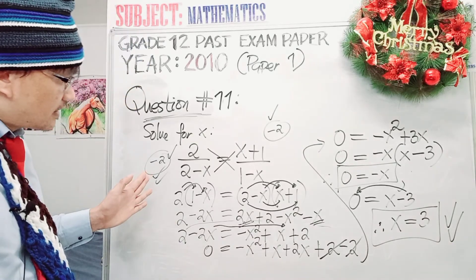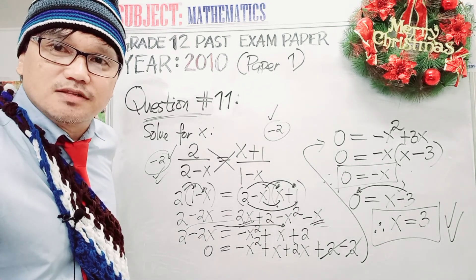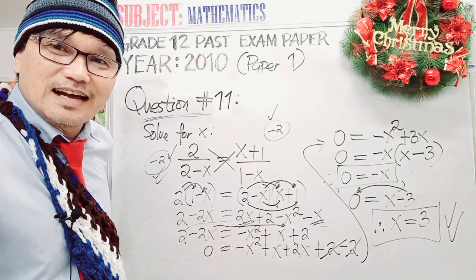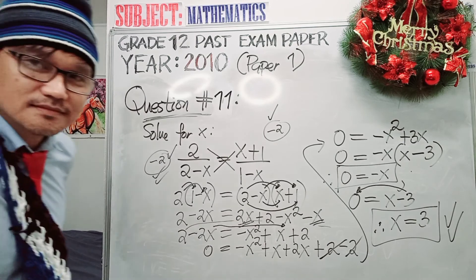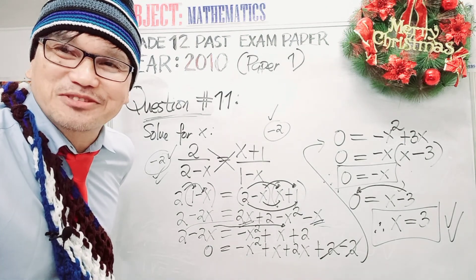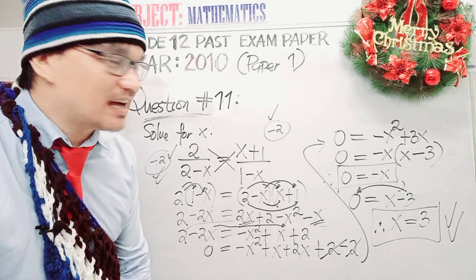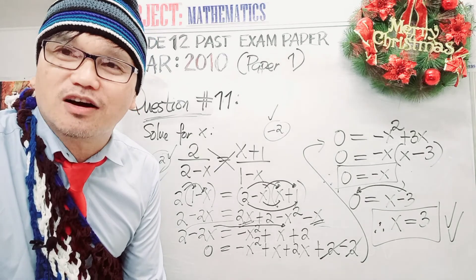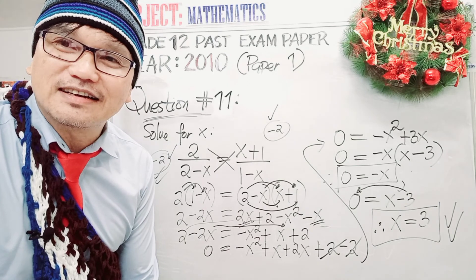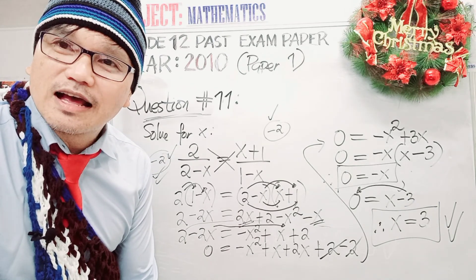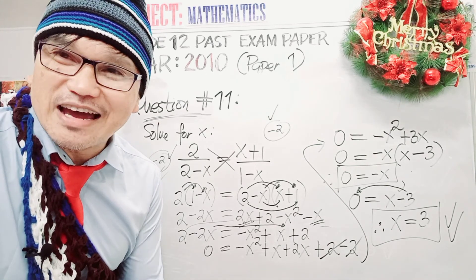Have a look at how we worked it out, advanced mathematics students in Papua New Guinea, the Philippines, and around the world. This is question number 11, part B of paper 1 for grade 12 — it is on algebra. This is Mr. Delisius. I'll see you again in question number 12.